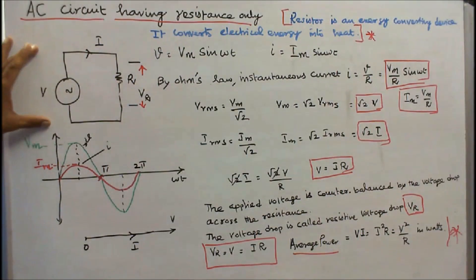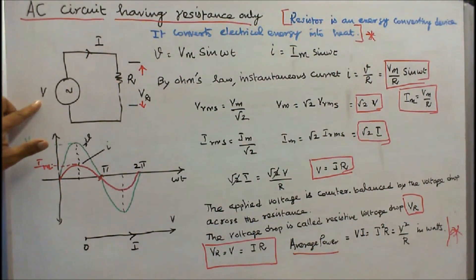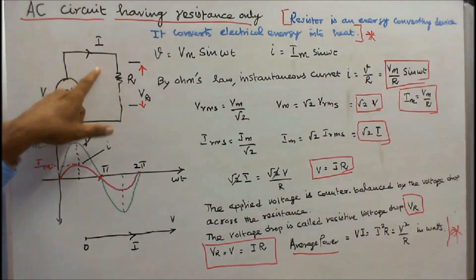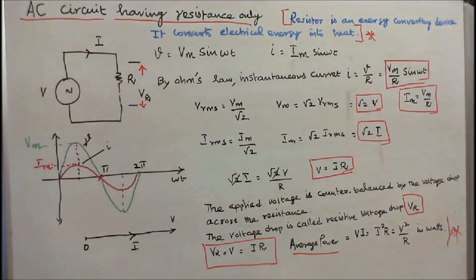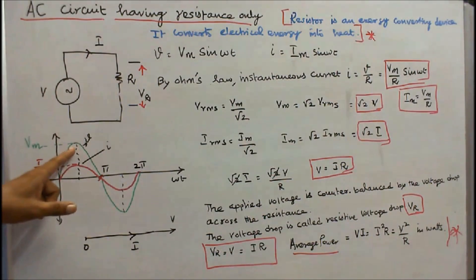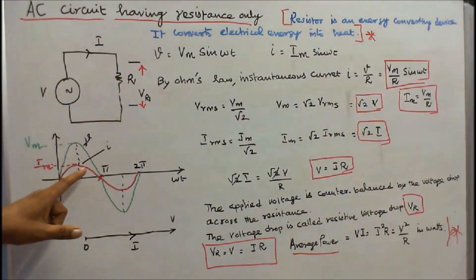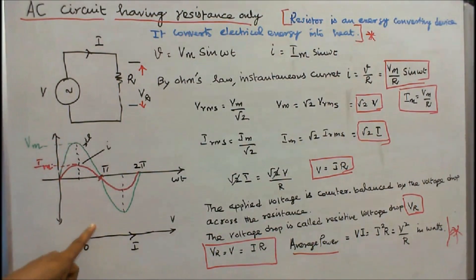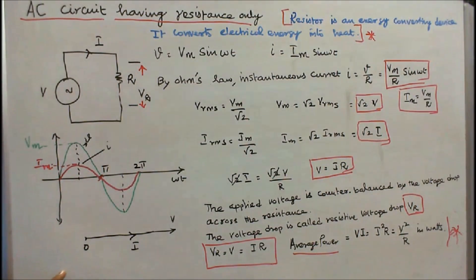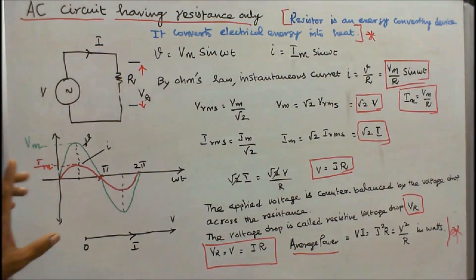This is a circuit diagram. Here V is RMS voltage, I is RMS current, and R is resistance. This is a waveform — this is a voltage waveform and this is a current waveform. Both the current and voltage are positive sine waves. Thus the current through the resistor is in phase with the voltage across the resistor; the phase difference is zero.